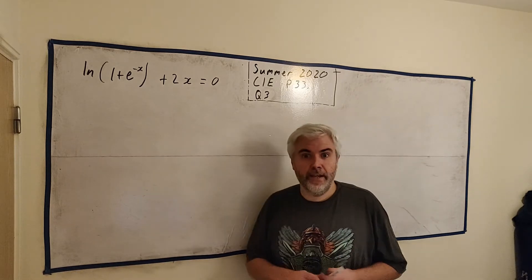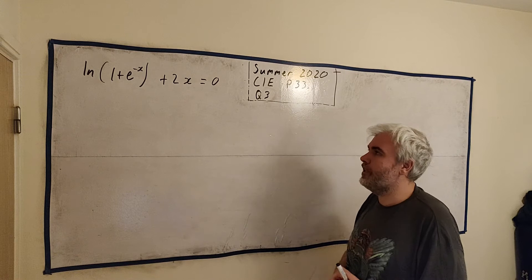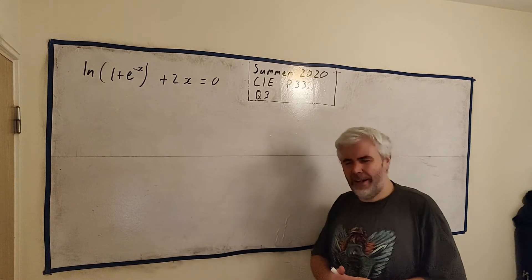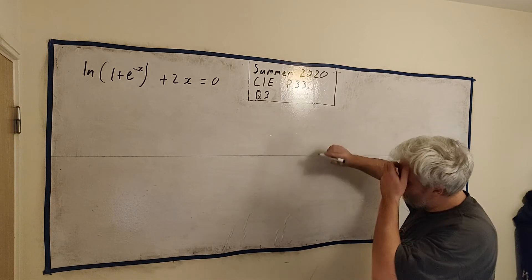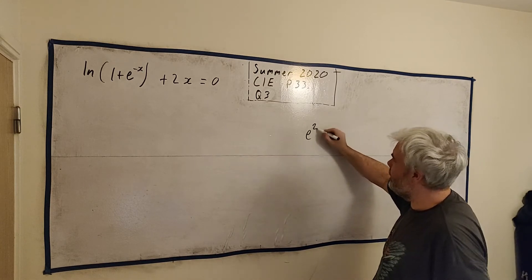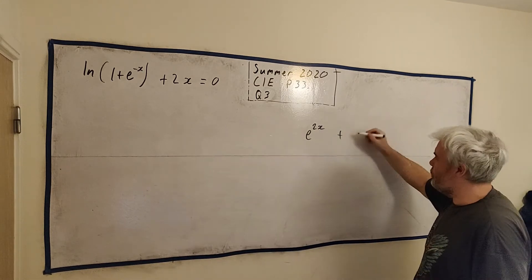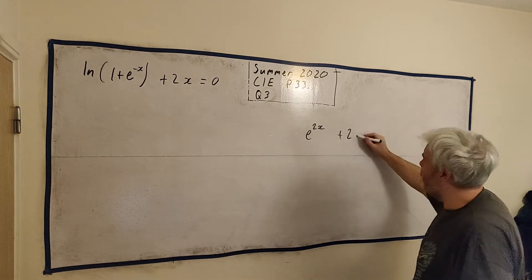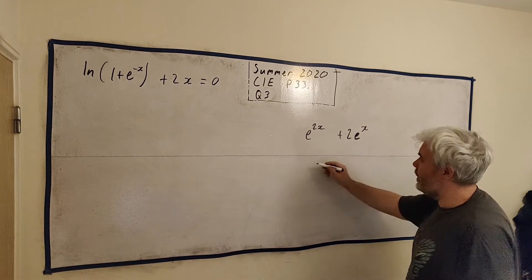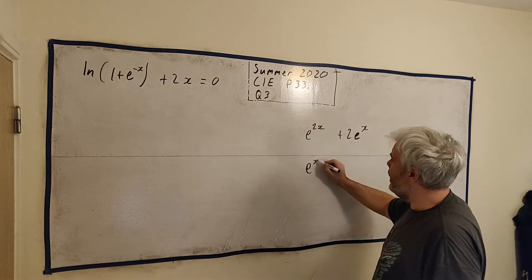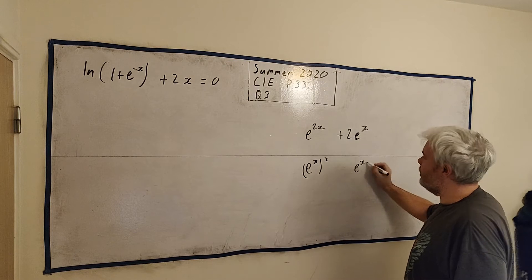To do that it can be tricky for a lot of students to see how to proceed. One idea I'd give you is it's very common for this type of question to be left with something that looks like e^(2x) plus something, let's say 2e^x. That is a quadratic equation. We can change that into (e^x)^2 and we can change this into e^x.